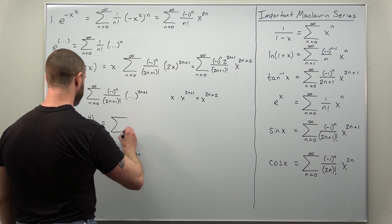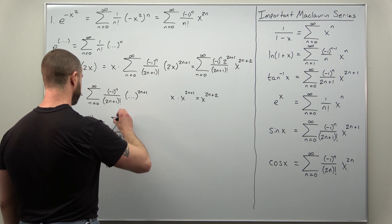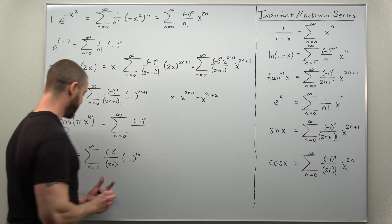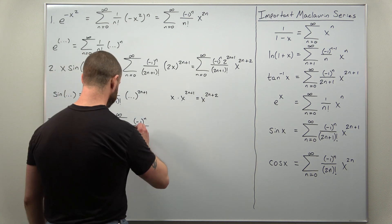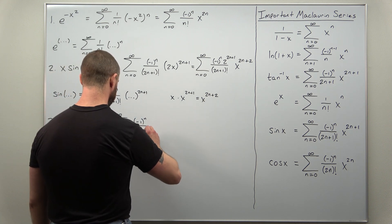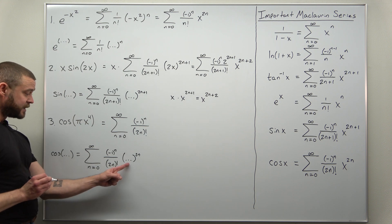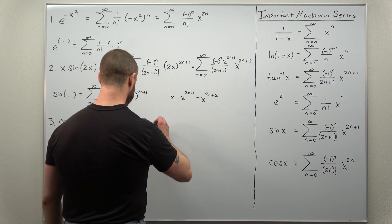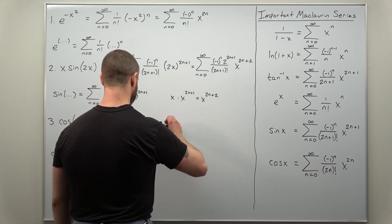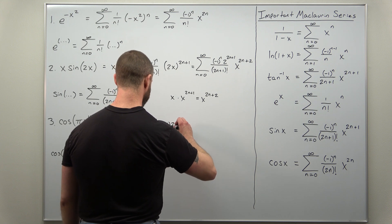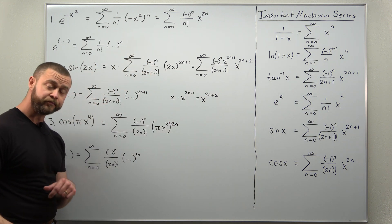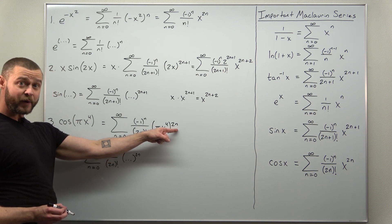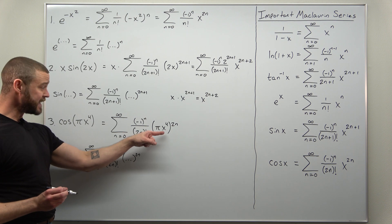So we'll get the sum going from n equals 0 to infinity of negative 1 to the nth power divided by 2n factorial, and inside the parentheses we make the replacement with pi times x to the fourth, all raised to the 2n power. Like the previous problems, we apply properties of exponents and take the 2n power of both pi and x to the fourth.